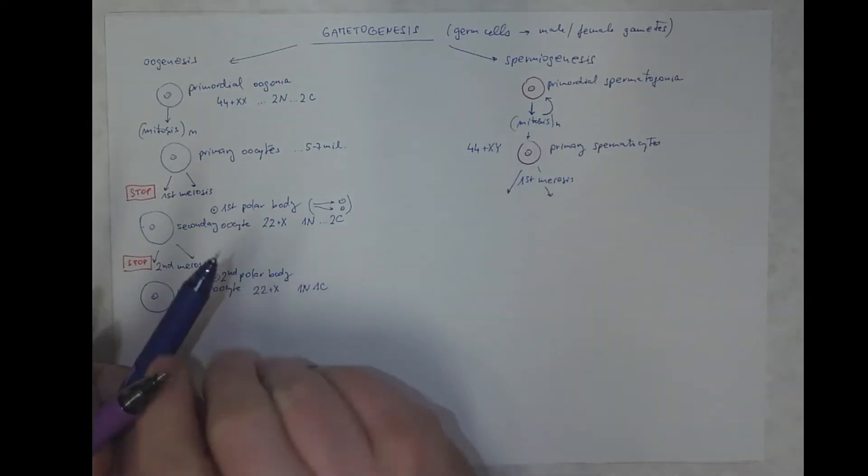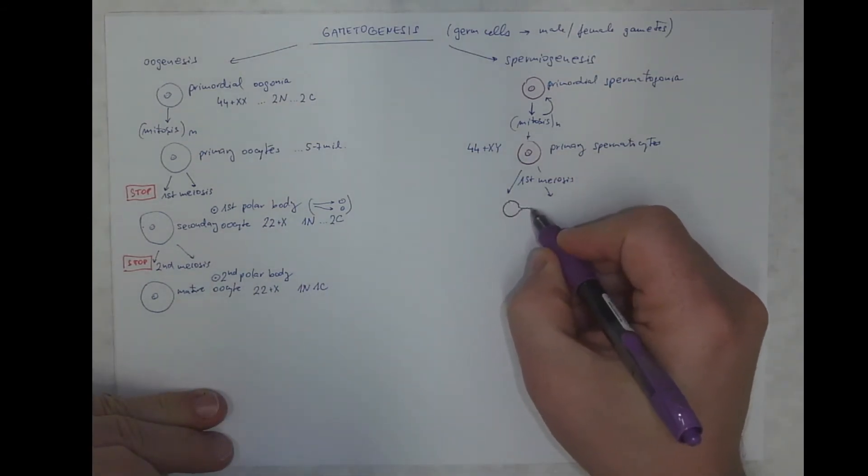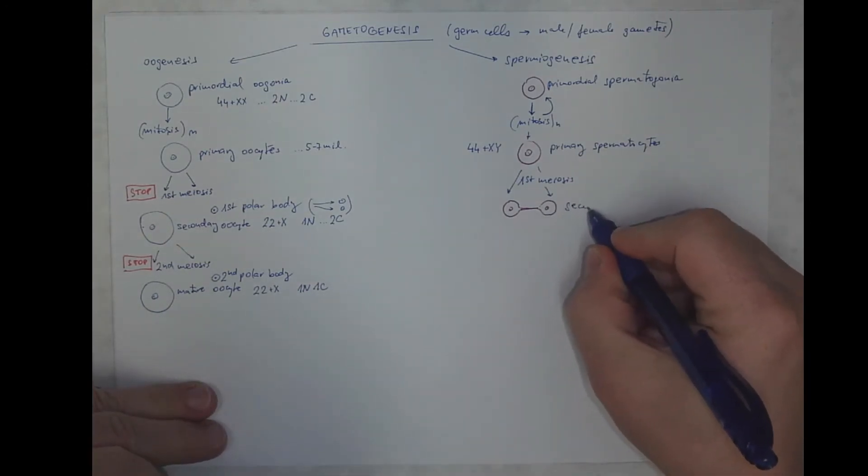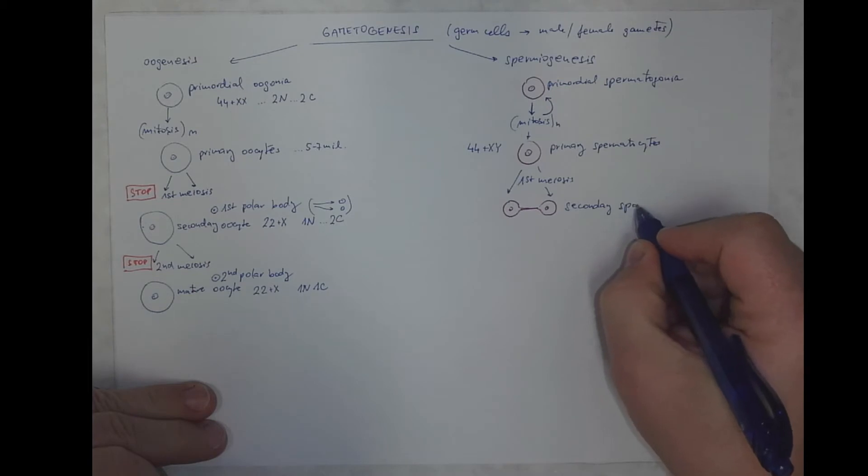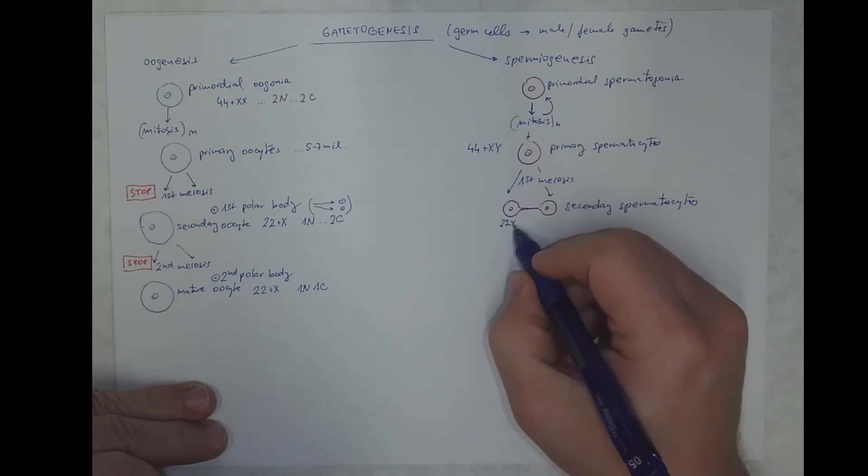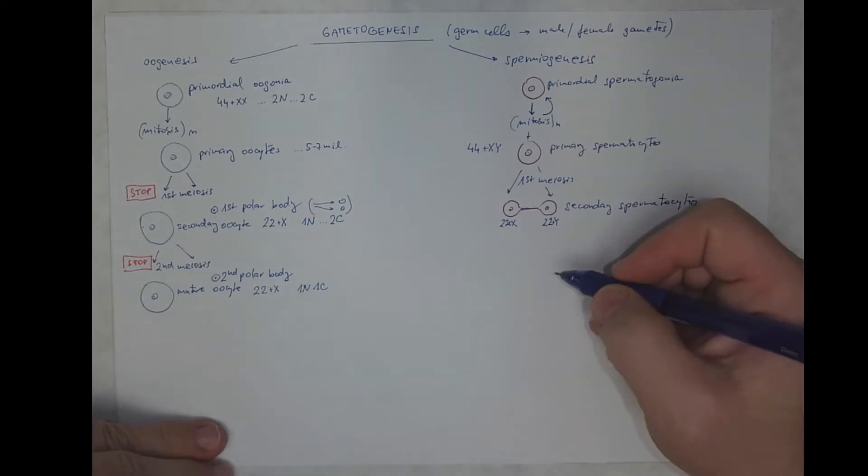the outcome of which is a pair of secondary spermatocytes that are connected with a thin cytoplasmic link. One of these will inherit 23 chromosomes, including X chromosome. Another one will inherit 23 chromosomes, but one of these will be Y chromosome.